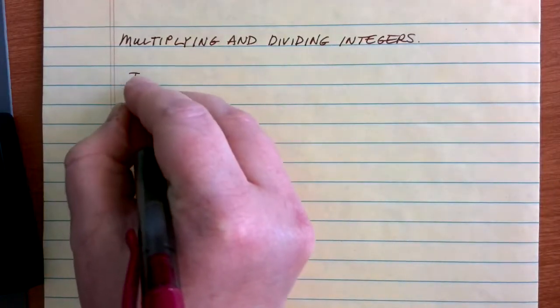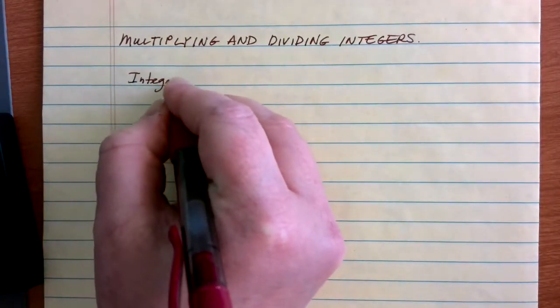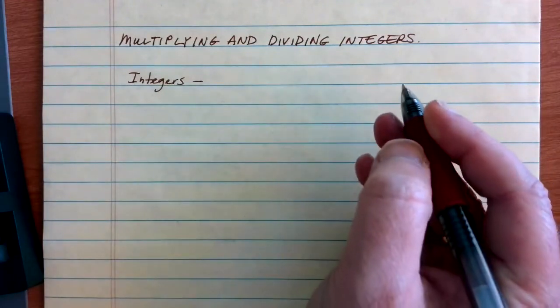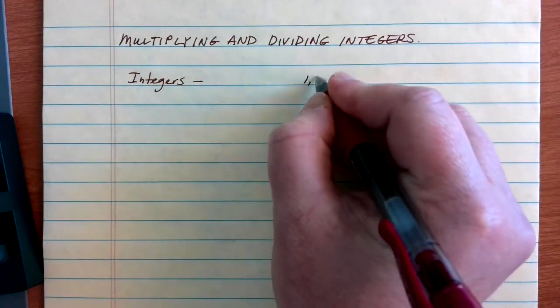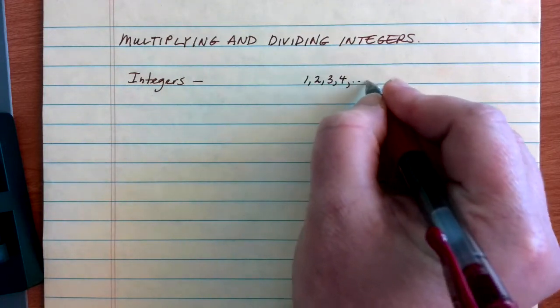The word integers is used as a set of numbers very specifically. What we are using is all of our counting numbers: 1, 2, 3, 4, and so on.